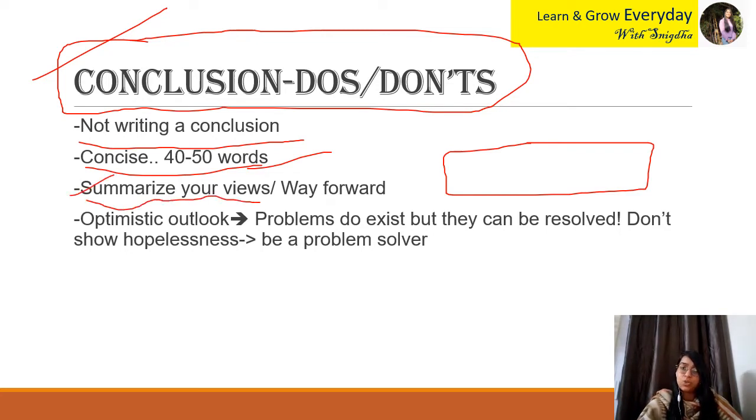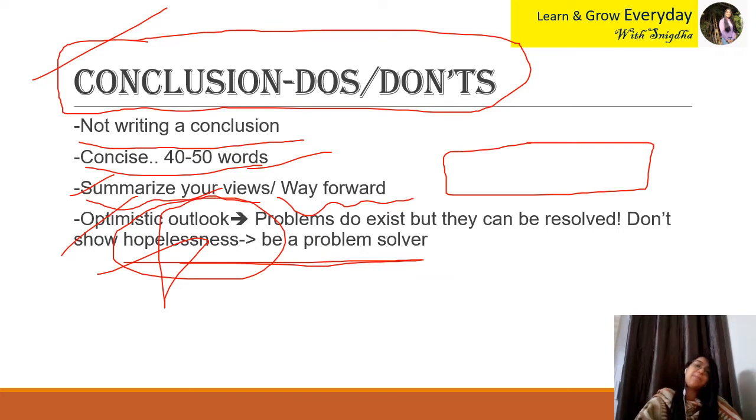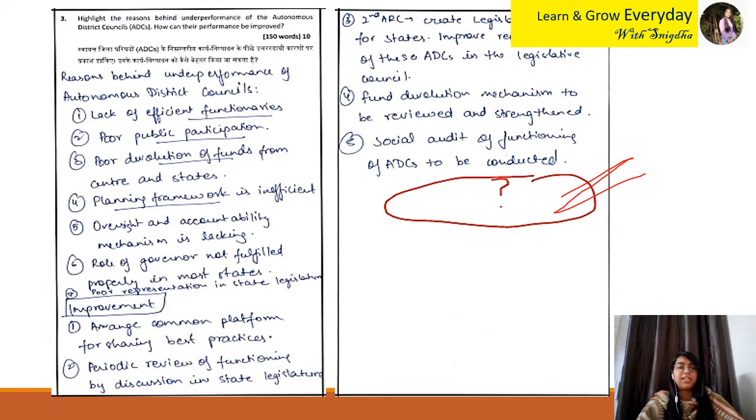In the conclusion, you can summarize your answer. Or if there is an issue that is going on, like if there is a question on water stress, in conclusion you can give an innovative way forward. You can mention case studies briefly, just a reference. And finally, your conclusion should be optimistic.